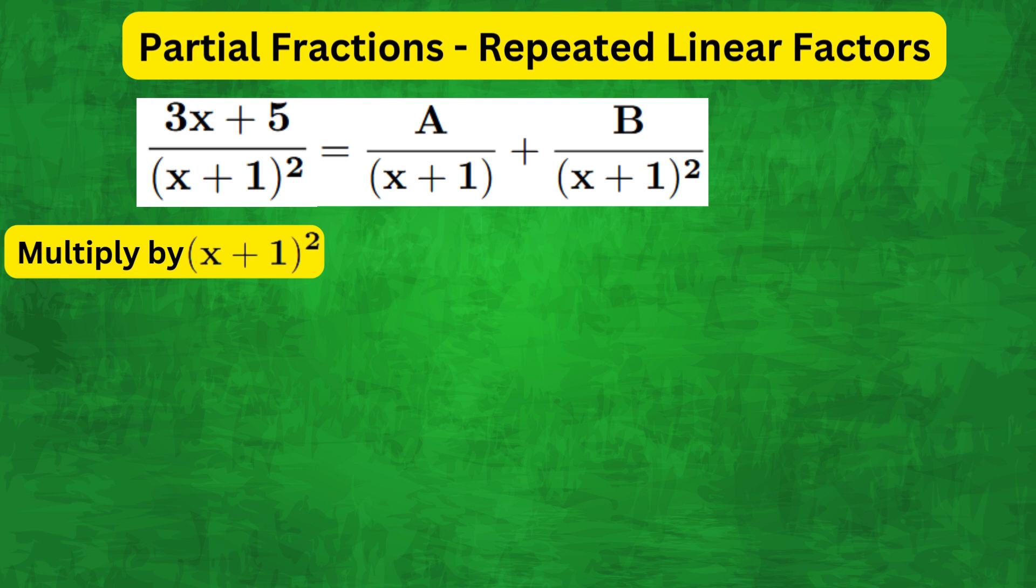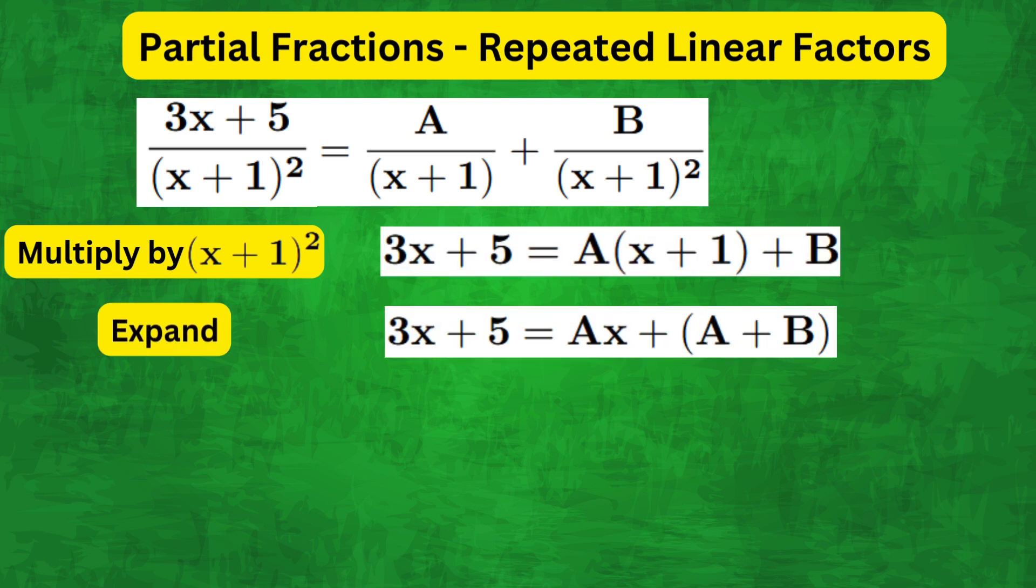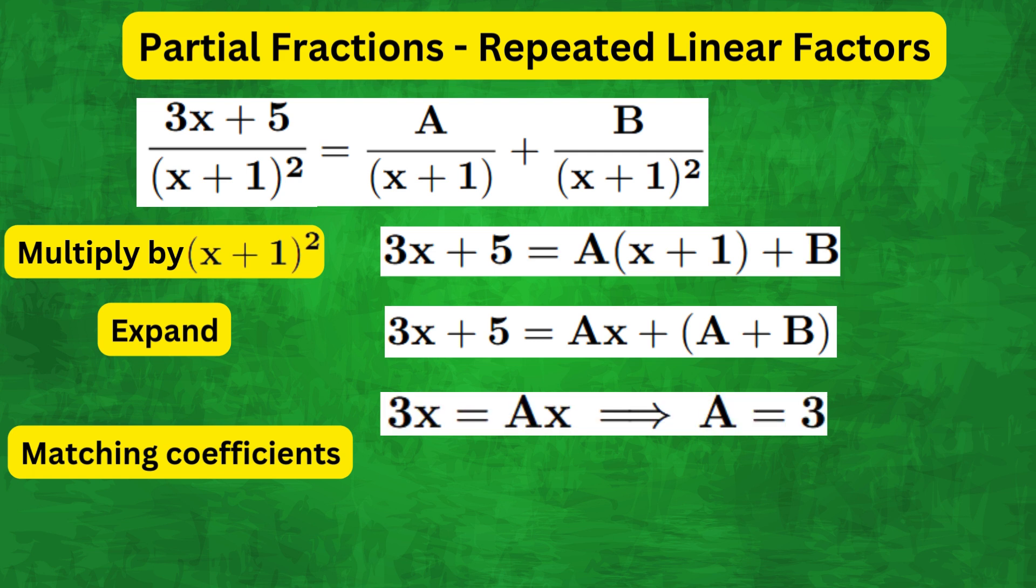We multiply both sides by (x + 1)² and expand to get 3x + 5 = Ax + (A + B). Then comparing the x terms on both sides and matching coefficients gives us A equals 3 and B equals 2.